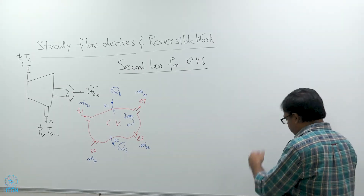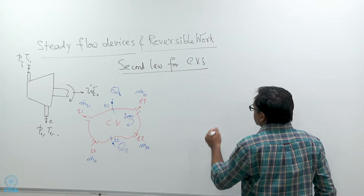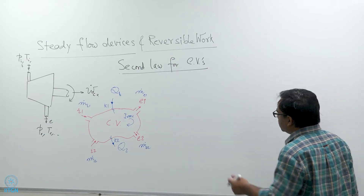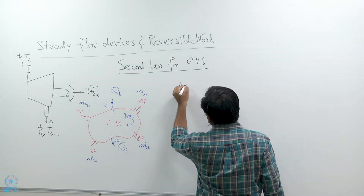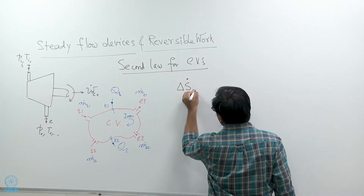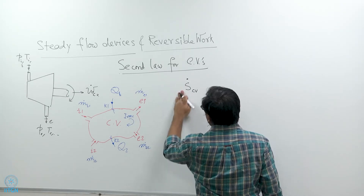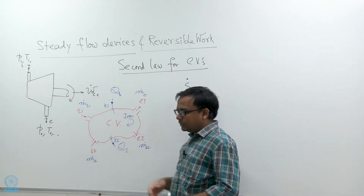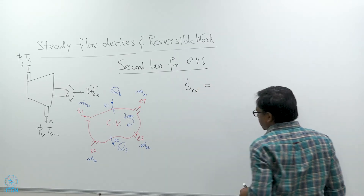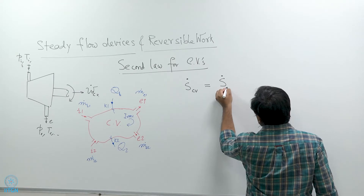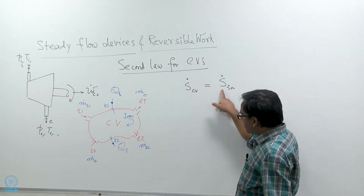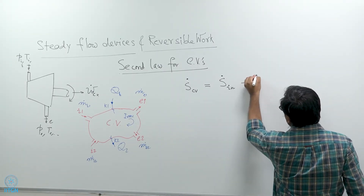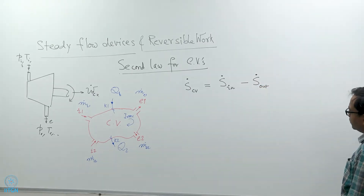Let us write the second law of thermodynamics for this control volume. We can write the second law as a rate equation. The rate of change of entropy of the control volume — that is S-dot-cv — equals the rate at which entropy is flowing into the control volume minus the rate at which entropy is flowing out of the control volume.